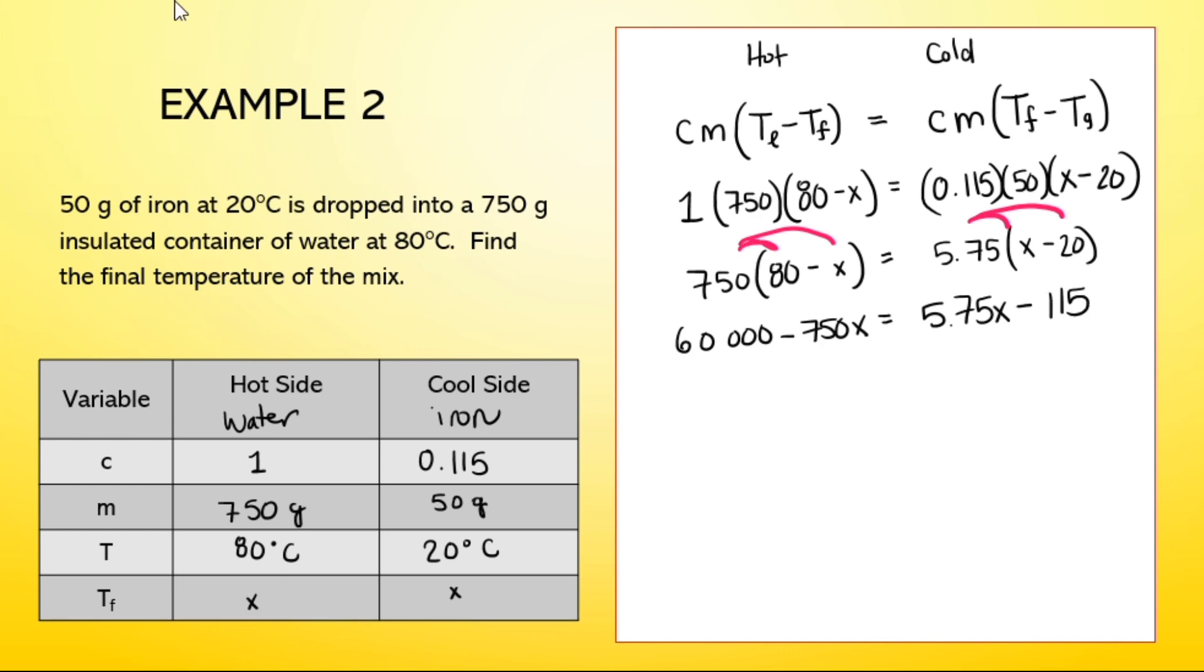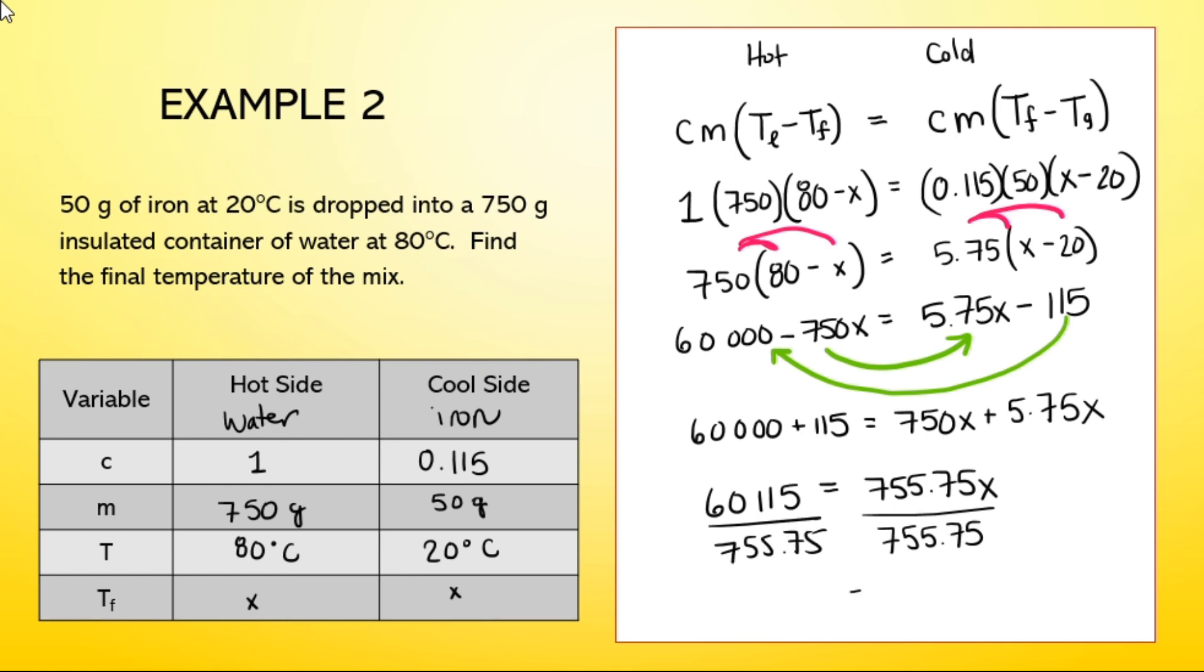I'm going to do it in one step. I'm going to move the X to this side, so it's positive. And I'm going to move the 115 to the left side, so it also becomes positive. So I'm going to have 60,000 plus 115. So 60,115 is going to equal 755.75X. Last step, divide both sides by whatever is tying up the X. And I'm going to get 79.5 degrees Celsius. So barely any temperature drop because water is awesome.